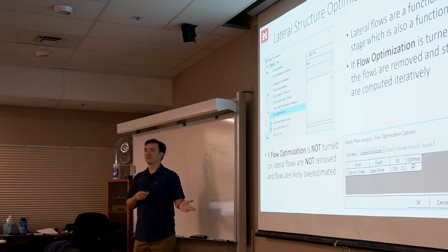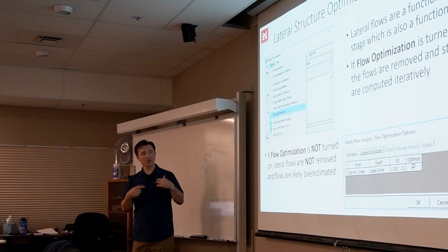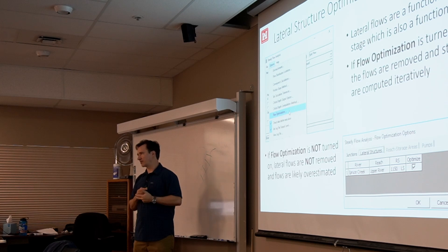If you don't turn that off, it'll compute a flow at that structure, but it won't take the flow out of the main stem. And so that's a much easier solution, but generally, it's going to overestimate those flows at the structure because the stages on the river are going to be too high. Does that make sense?